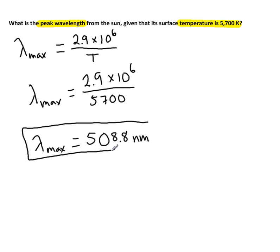So 508.8 nanometers, about 509 nanometers. The color that corresponds to that is visible light, and it corresponds to roughly green, kind of greenish.